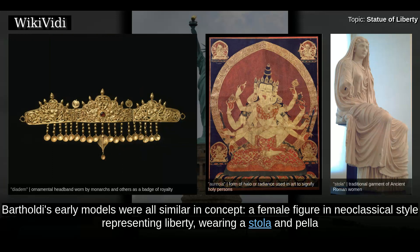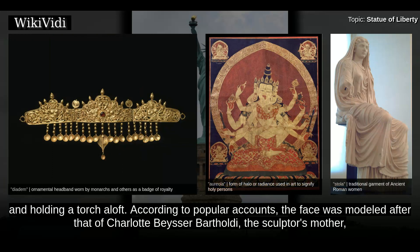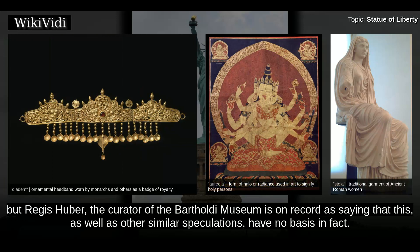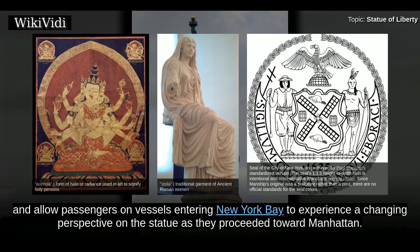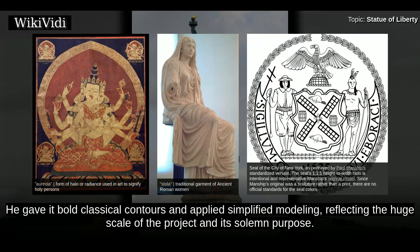Bartholdi's early models were all similar in concept: a female figure in neoclassical style representing liberty, wearing a stola and peplum, and holding a torch aloft. According to popular accounts, the face was modeled after that of Charlotte Beysser Bartholdi, the sculptor's mother. But Régis Huber, the curator of the Bartholdi Museum, is on record as saying that this, as well as other similar speculations, have no basis. In fact, he designed the figure with a strong, uncomplicated silhouette, which would be set off well by its dramatic harbor placement, and allow passengers on vessels entering New York Bay to experience a changing perspective on the statue as they proceeded towards Manhattan.